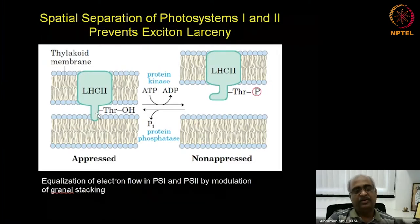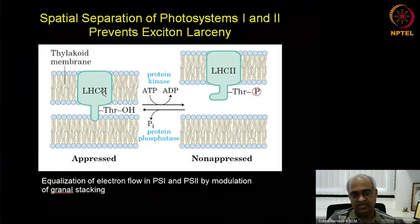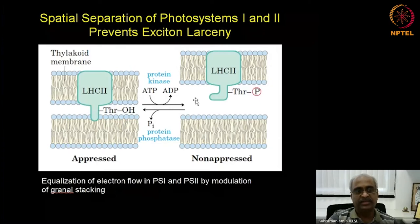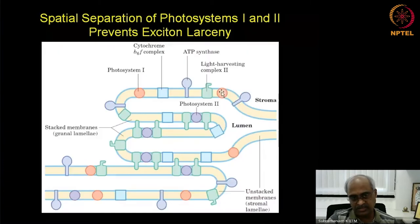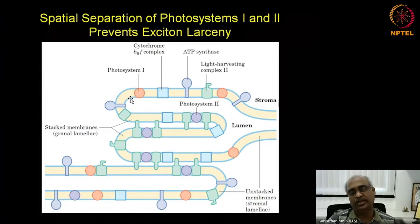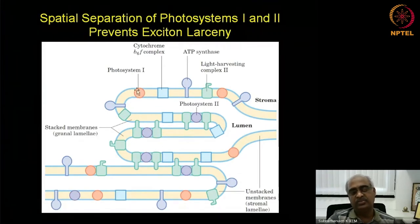The protein kinase phosphorylates a threonine residue on LHC2, and that leads to a conformational change such that LHC2 is no longer anchored to the adjacent thylakoid membrane and it detaches. When it is detached and the appressed structure is relieved, LHC2 is free to go and harvest photons for photosystem 1.